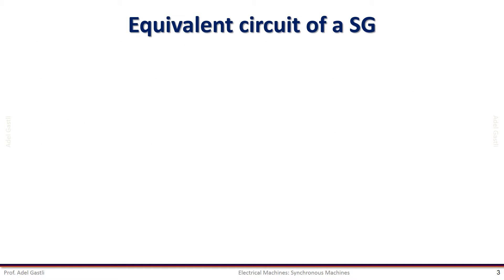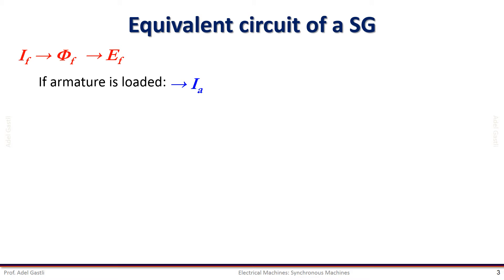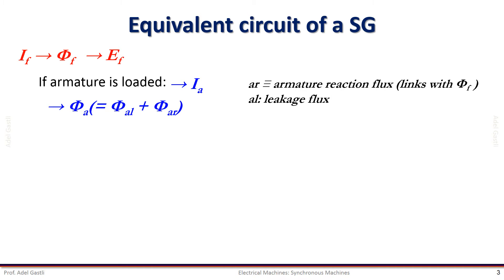Let us start with the equivalent circuit of a synchronous generator. We'll cover the synchronous motor in the next part. As we have seen in the previous part, the excitation current IF generates a field flux phi F. When the rotor is rotating, a back EMF EF is induced inside the armature winding. When the armature of the synchronous generator is loaded, an armature current IA flows in the armature winding and the load. This armature current produces an armature flux that is split into a leakage flux phi AL and an armature reaction flux phi AR.